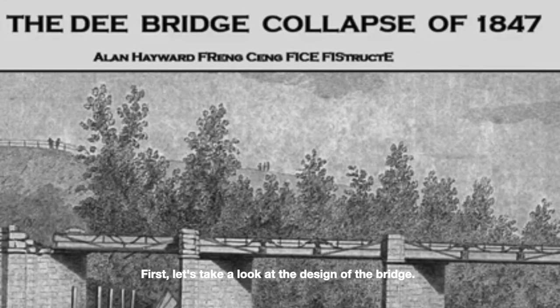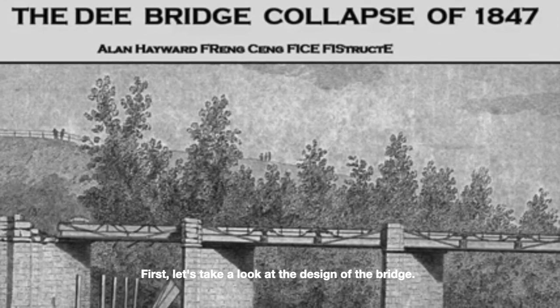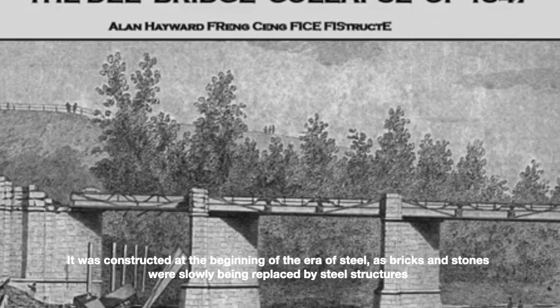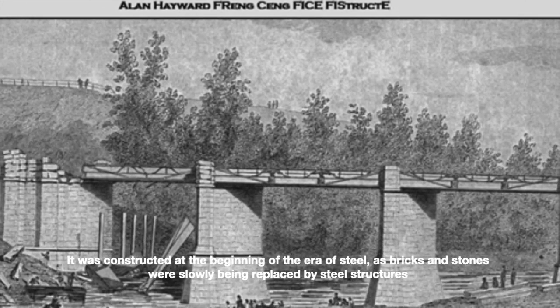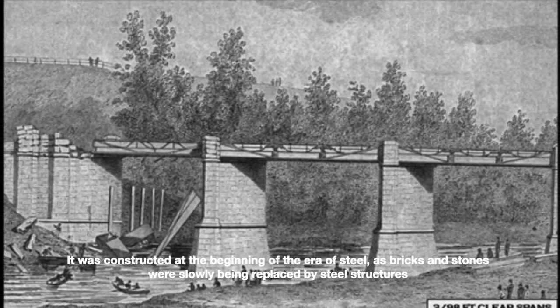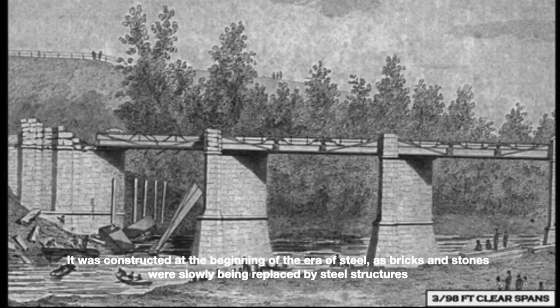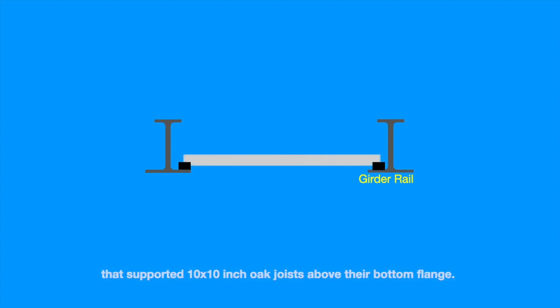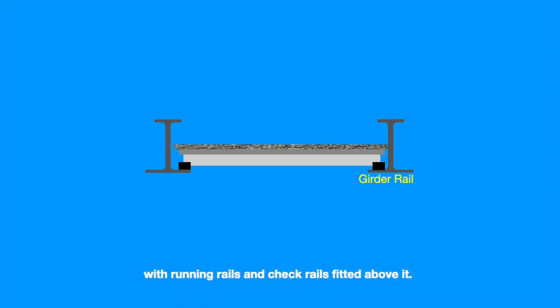First, let's take a look at the design of the bridge. It was constructed at the beginning of the era of steel, as bricks and stones were slowly being replaced by steel structures. The bridge design consisted of two running steel girders that supported 10 by 10 inch oak joists above the bottom flange. A 4 inch timber deck was then laid on the top of this, with running rails and check rails fitted above it.